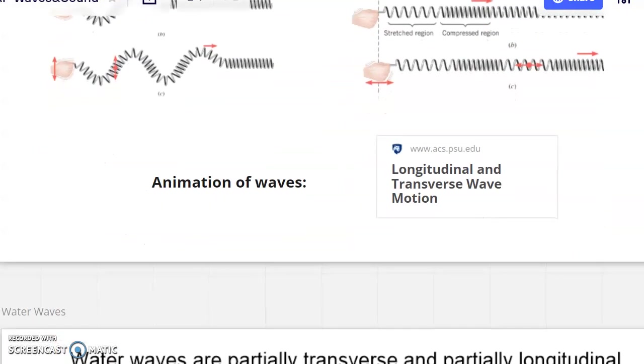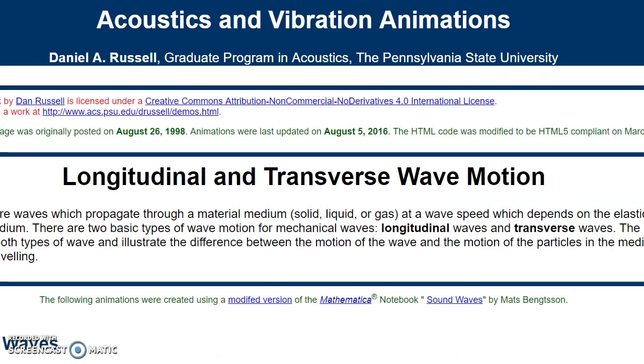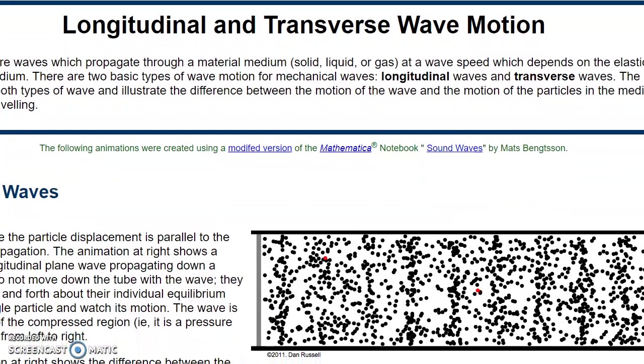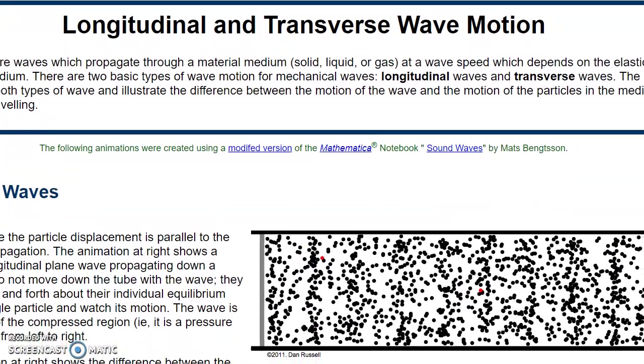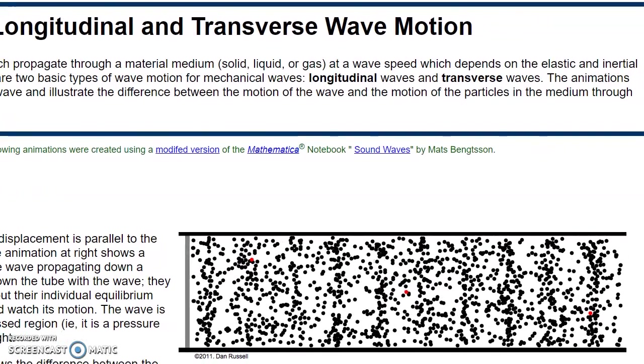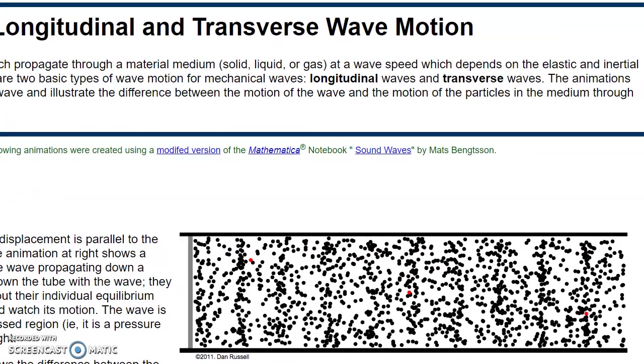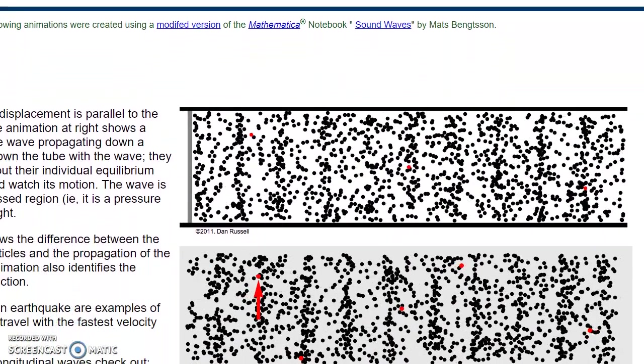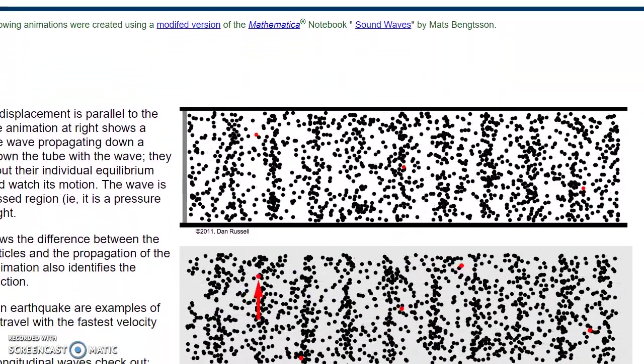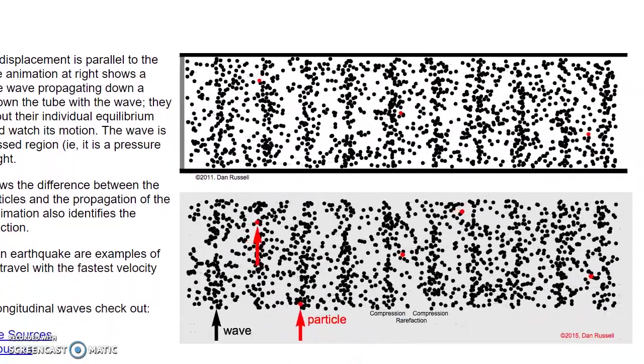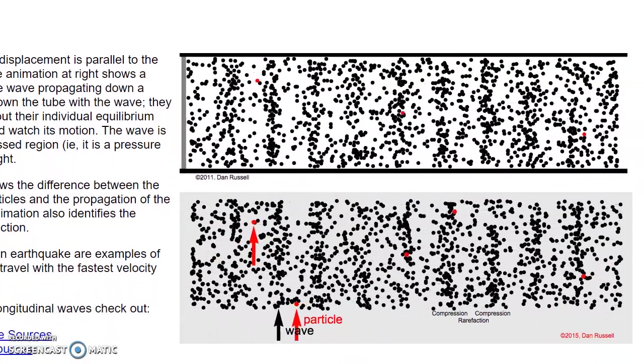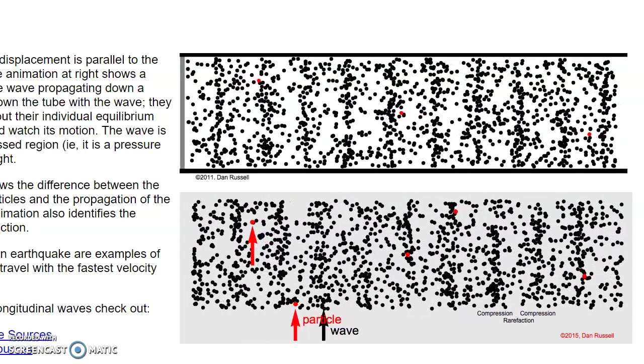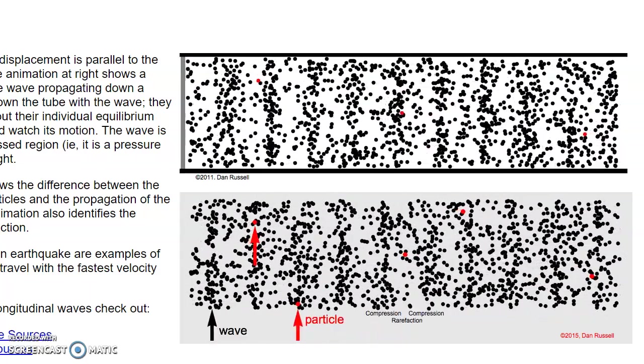Now, our friends at Penn State did a great job in showing some vibration of some waves, and I wanted to show you these images that they did. Here you can see some longitudinal waves. And you can see that these are longitudinal because the wave is moving to the right, but the particles are moving left to right. They're vibrating in a parallel and anti-parallel direction to the wave speed.